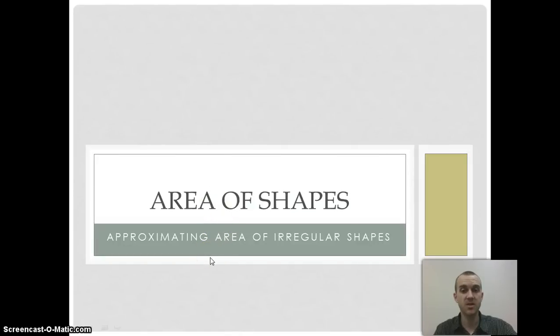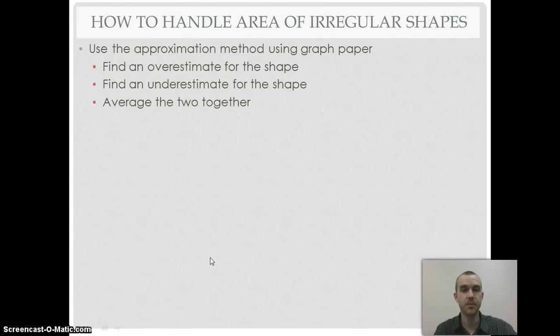In this video, we'll explore how to approximate an irregular shape's area. Not all shapes can be split easily using the moving or additivity principles, so one method we can use is graph paper. We lay the shape on the graph paper, overestimate how many squares it covers, underestimate how many squares it covers, and average those two values together.